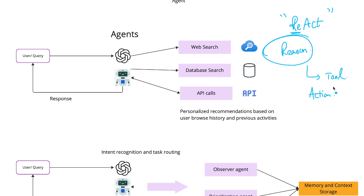In the ReAct framework, an AI agent thinks out loud just like a human — it takes its own time, then generates a meaningful response back to the user. The complete set of activities is purely autonomous in nature.